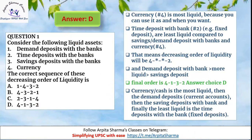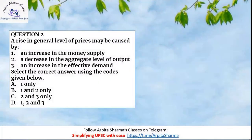Moving to question 2: A rise in the level of prices may be caused by — (1) increase in the money supply, (2) decrease in the aggregate level of output, and (3) increase in the effective demand. Which of these options will result in a rise in the general level of prices?